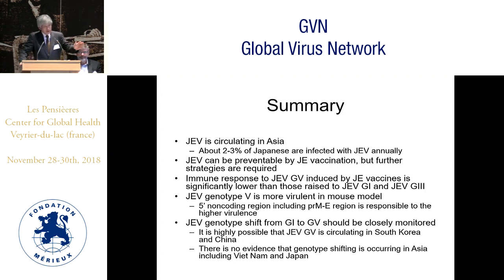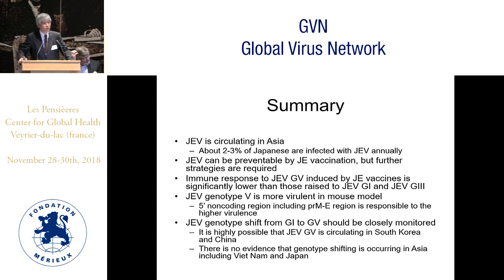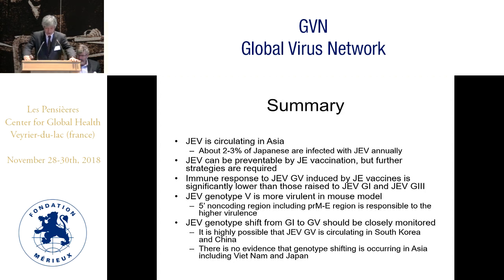Our counterpart in South Korea reported that JEV genotype 5 was isolated from the cerebrospinal fluid of a JE patient. Our experience indicates that virus isolation from patients is very difficult. The pathology or pathophysiology of JE caused by JEV genotype 5 is a little different from that of patients with JE caused by genotype 1 and genotype 3. We should study genotype 5 JEV more closely. Thank you very much.